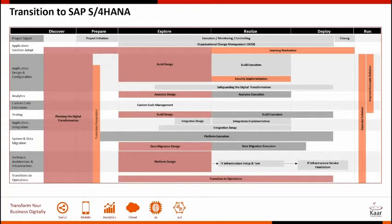During the Prepare phase, which is the actual start of your S/4 conversion, you produce a Level 2 project plan. All strategies for UI, infrastructure, testing, reporting, cutover, and governance are finalized in this phase.